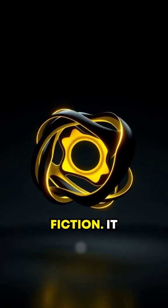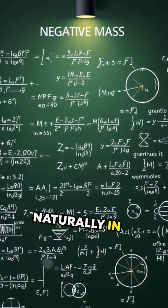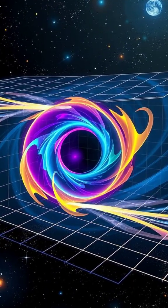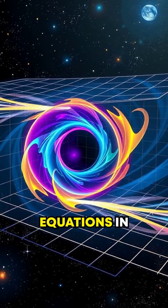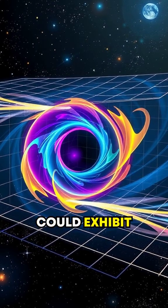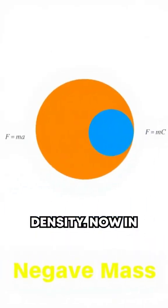Negative mass isn't science fiction. It emerges naturally in certain theoretical models in physics. For example, solutions to Einstein's field equations in general relativity allow for regions of spacetime that could exhibit negative energy density.